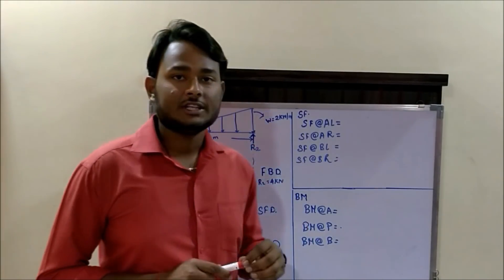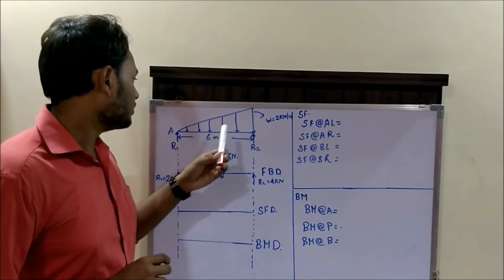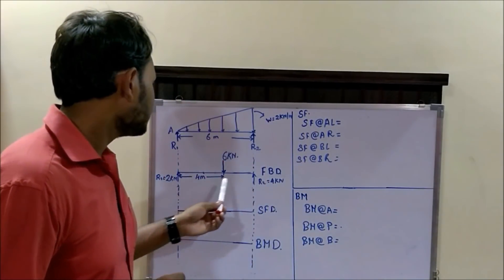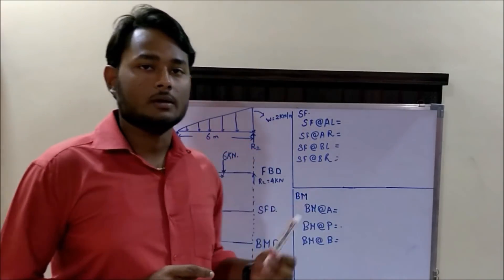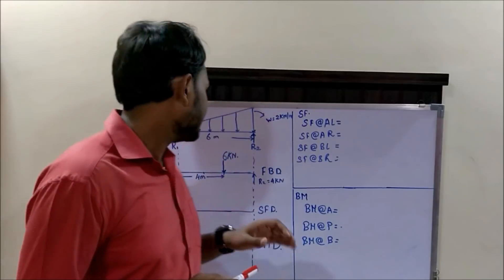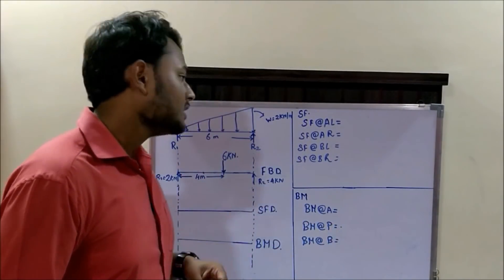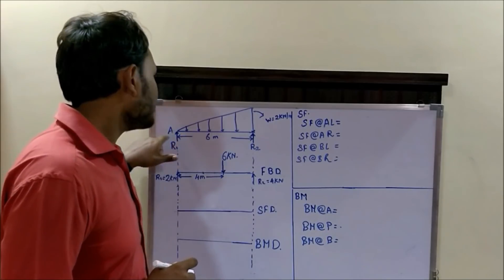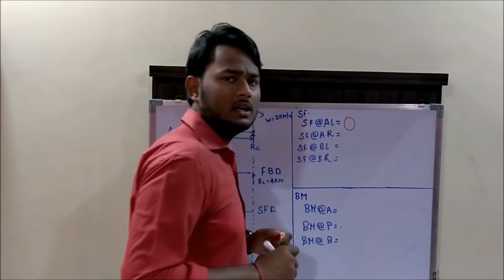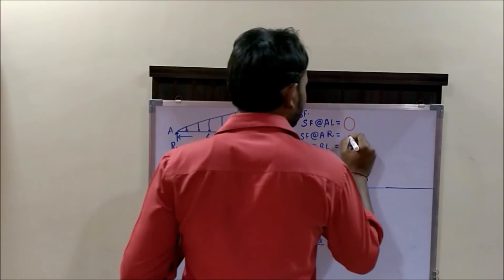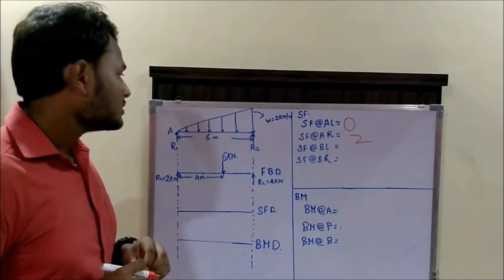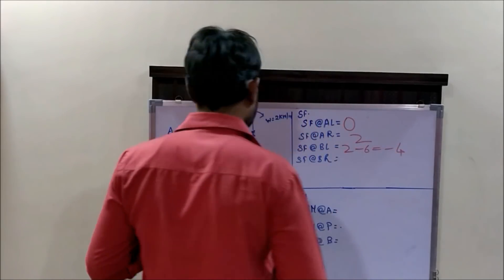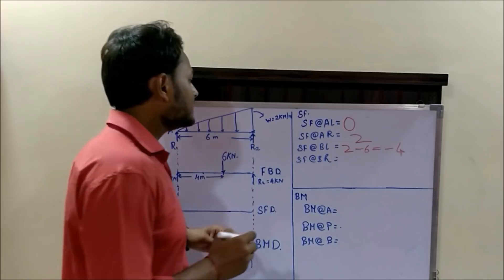Let us consider one more example with a uniformly varying load that increases from 0 to 2 kN per meter. We need to construct the shear force and bending moment diagram. The support reactions are calculated using the equations of equilibrium. Using the traditional method: the shear force just to the left of A is 0; just to the right of A it is 2 kN; just to the left of B it is 2 minus 6, which equals minus 4 kN; and just to the right of B it is 0 kN.